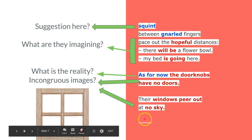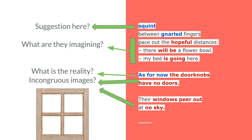The last six or seven lines—we're left with the image of these people in the empty fields or in these barren lots where somebody's laid a stone, and they're imagining where their house will go. 'They pace out the hopeful distances, there will be a flower bowl, my bed is going here.'